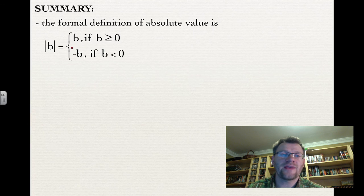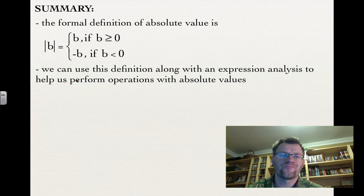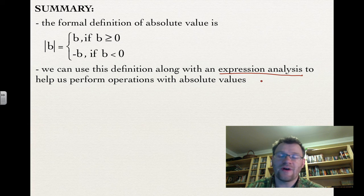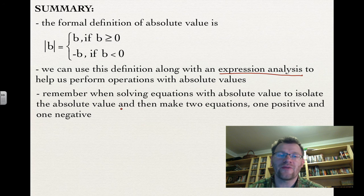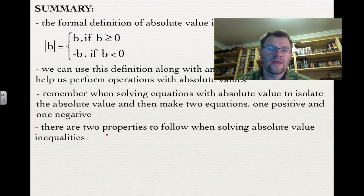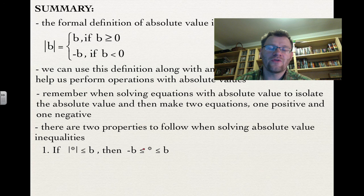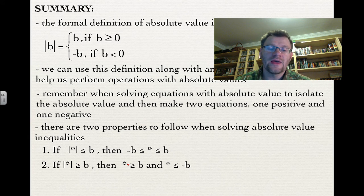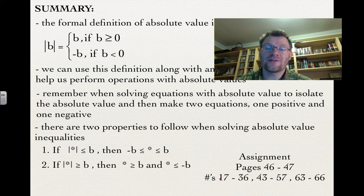In summary: the formal definition of absolute value is |b| = b if b ≥ 0, and |b| = −b if b < 0. Use this definition along with an expression analysis to perform operations with absolute value. When solving equations, isolate the absolute value and make two equations — one positive and one negative. For inequalities, if |expression| < b then −b < expression < b; if |expression| > b then expression > b or expression < −b. Your assignment is pages 46 to 47, questions 17–36, 43–57, and 63–66. Good luck.